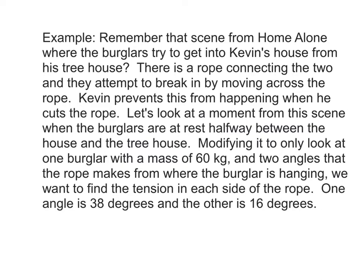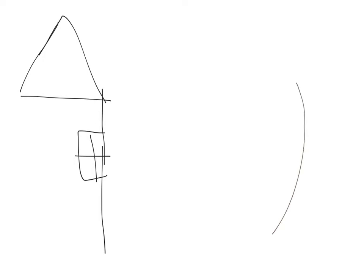I'm going to draw the diagram, hopefully it makes more sense once you see it. Let's start with a diagram of what's going on here. Here's Kevin's house and here's the window, and over here we're going to put our treehouse. Here's the tree and then there's a rope connecting the two and the burglars are halfway between.